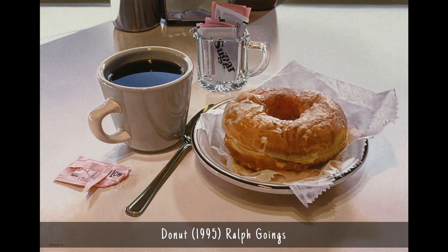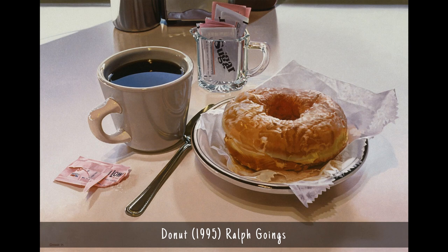Visual texture is the illusion of texture. The photorealist painters of the late 1900s and early 2000s were the best at creating this illusion.